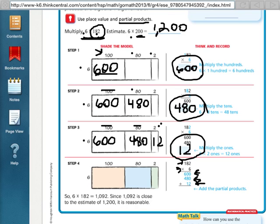All right, so now we're going to actually do the addition. 0 plus 0 plus 2 is 2. 0 plus 8 plus 1 is 9. And 6 plus 4 is 10. So our real answer to 182 times 6 is 1,092.